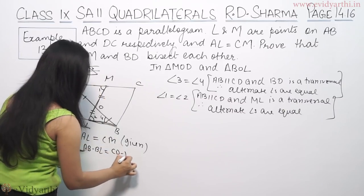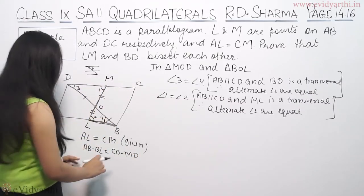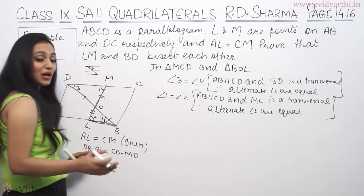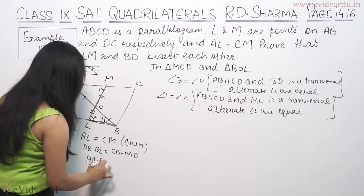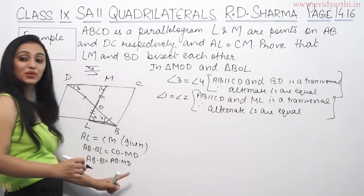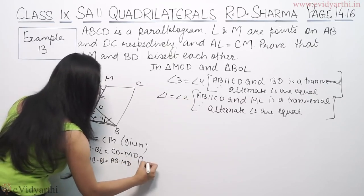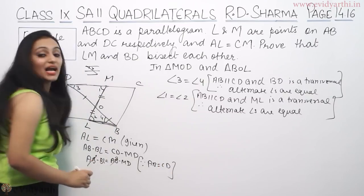This can be AB minus BL, which can be written as CD minus MD. AB and CD are the opposite sides of the parallelogram, so they are equal. AB minus BL is equal to AB minus MD.